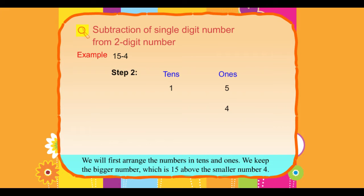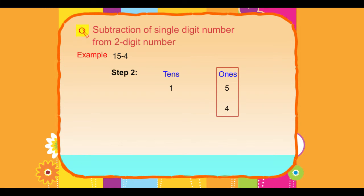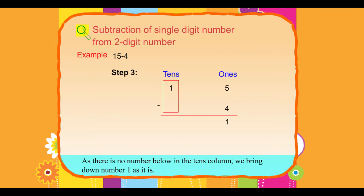We will first subtract numbers from the 1s column. 15 minus 4: 5 minus 4 equals 1. Step 3 — As there is no number below in the 10s column, we bring down the number 1 as it is.